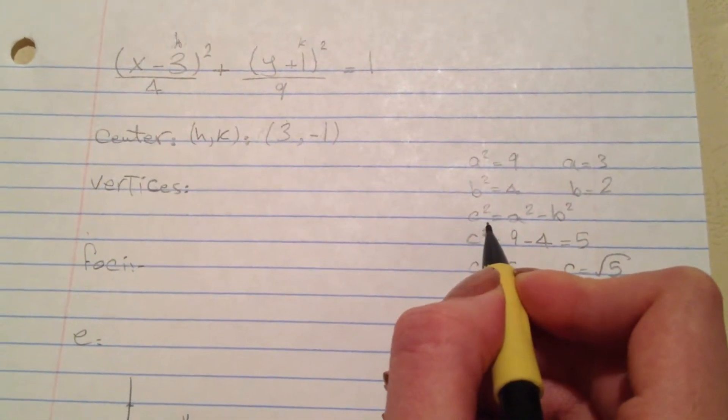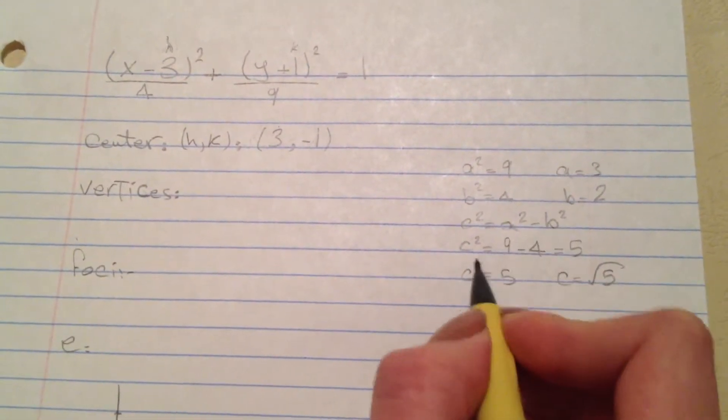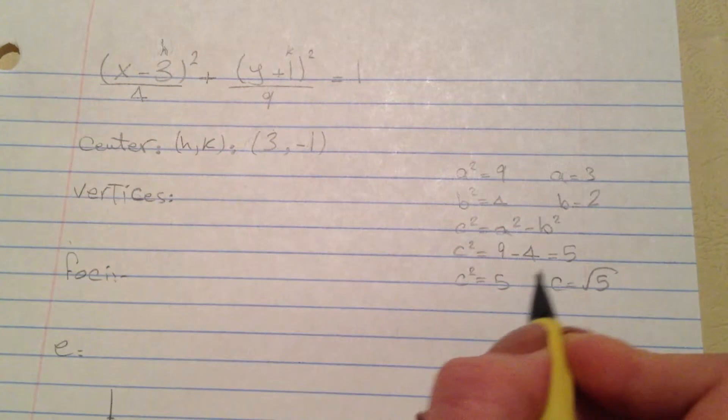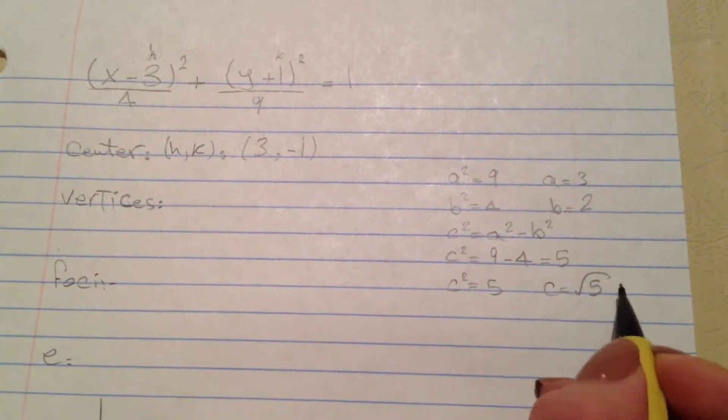To find c squared we have to do a squared minus b squared. c squared equals 9 minus 4 equals 5. So our c squared equals 5. c equals square root of 5.